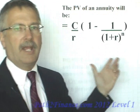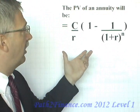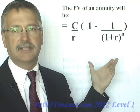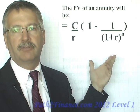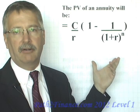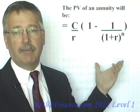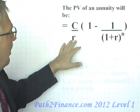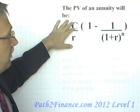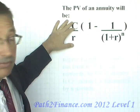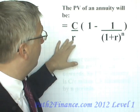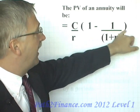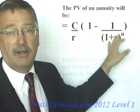So here we have the formula for present value. In most cases you'll simply use your financial calculator to come up with the values. Understand what the terms are: C is the periodic cash flow, R is the rate, and N is the number of periods.